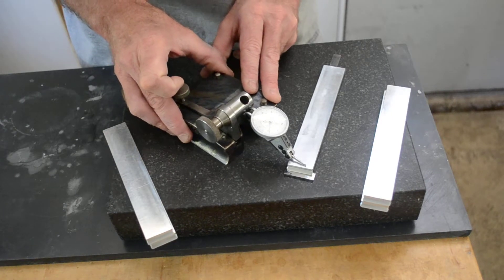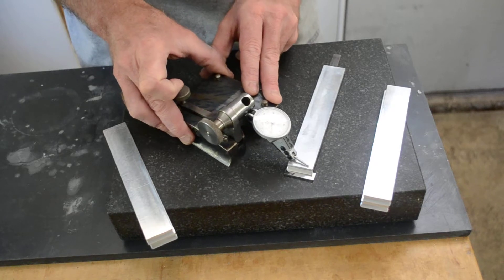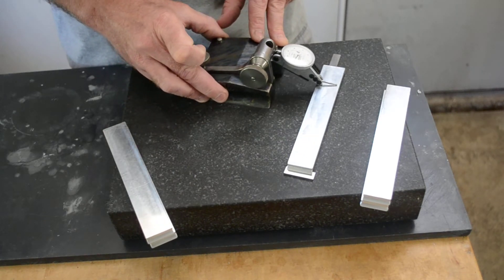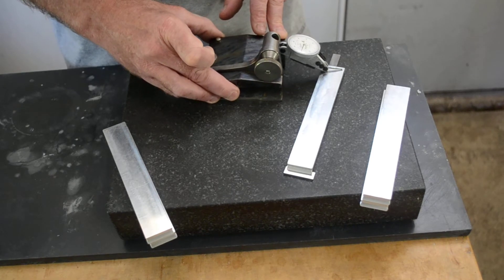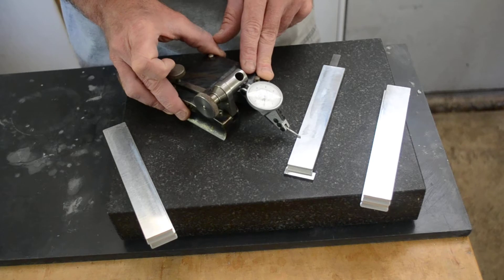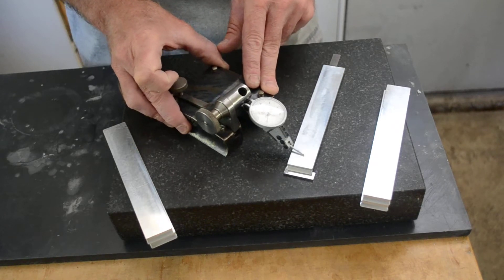There's one half tenths, there's four tenths over. Thou under. This one's about 1.4 thousandths out of flat.